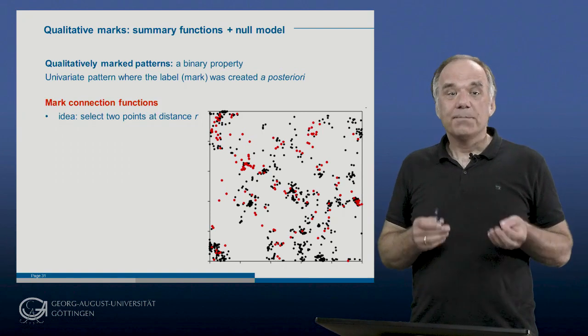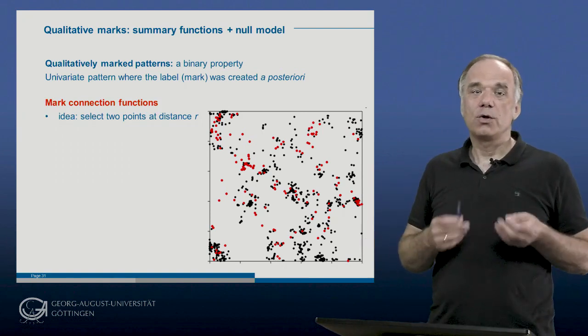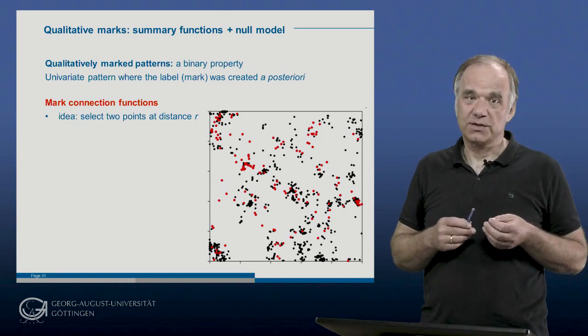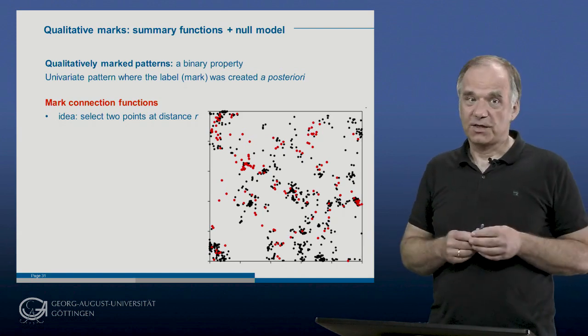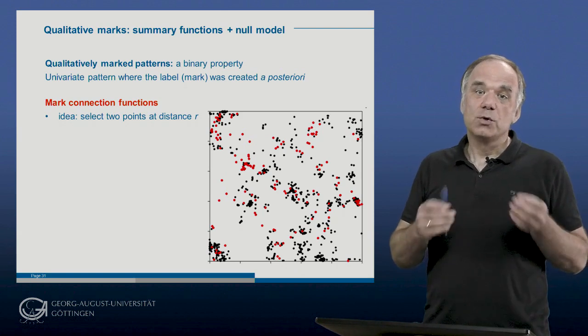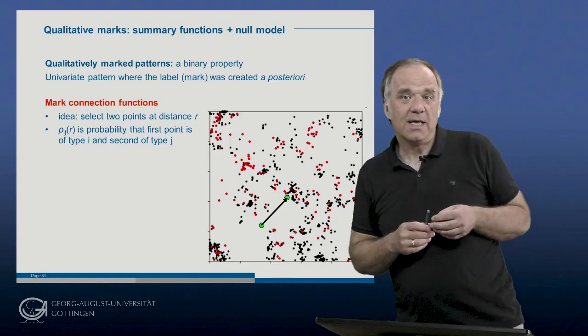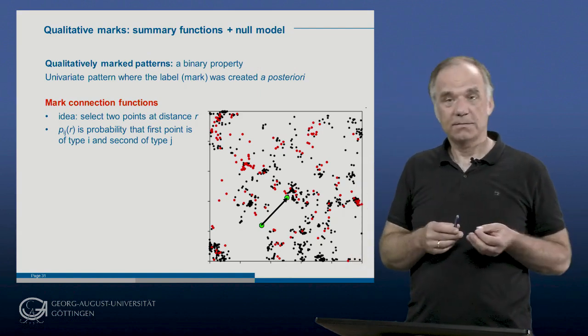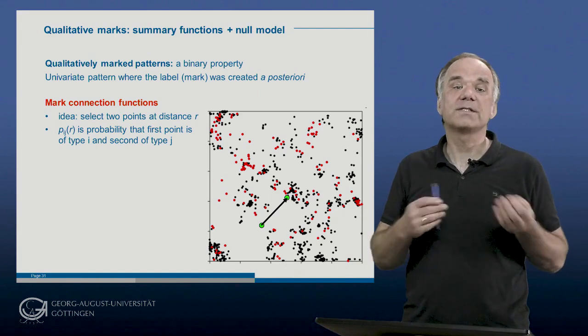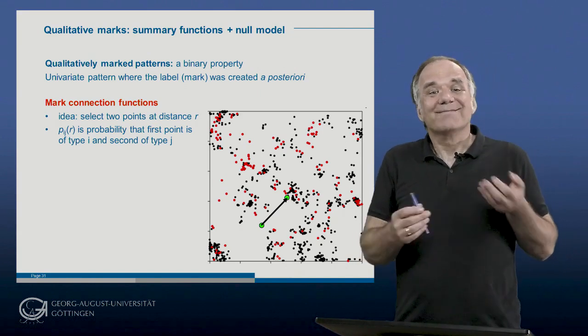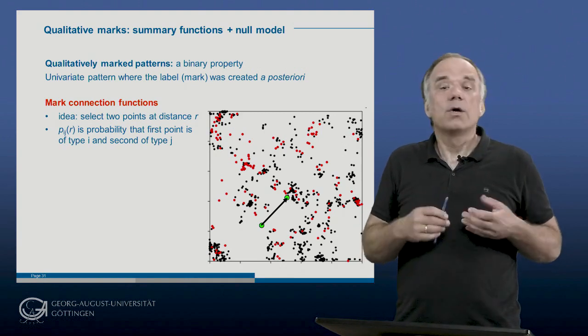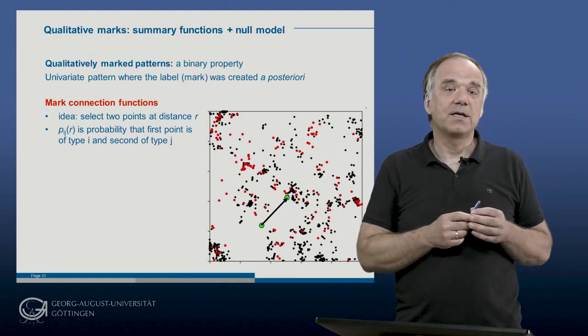Summary functions adapted to the conditional nature of this data type are called mark connection functions. Here we do not look at typical points as for the summary functions before, but at point pairs separated by a given distance. The mark connection functions are the probability that the first point is of the first type and the second point is of the second type, where both types can have a value of 1 or 2 as defined by the binary marks.